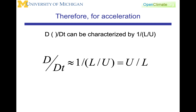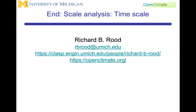The takeaway from this lecture is that the characteristic time scale for the time derivative — for the acceleration — will be U over L. That number is compared to the Coriolis term F-naught to determine whether or not rotation is important to a flow. And that is the end of the introduction to the concept of the time scale.